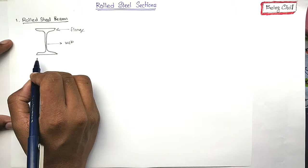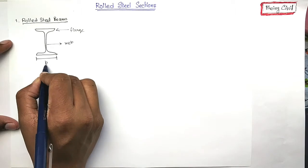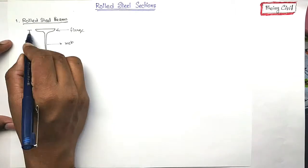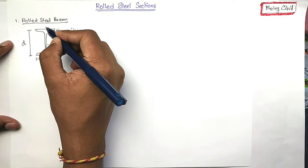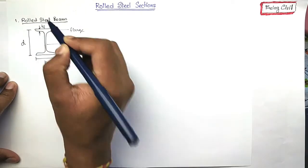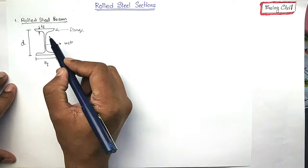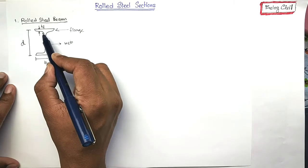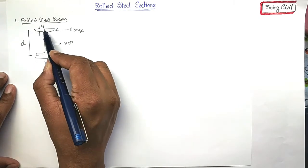I will show you that. This is width of the flange, it is called BF. This is the depth of the section. This thickness of the flange is called TF. You see, this varies here to here.